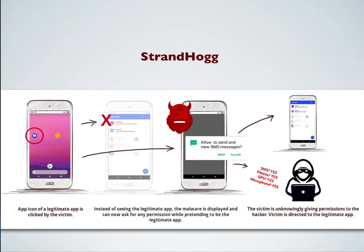Many might think a hacker has to manually target you for this bug to be exploited — that is a wrong assumption. Hackers have now developed bots using artificial intelligence that keep compiling your data automatically without needing to do targeted attacks manually. Whatever data comes in is collected, and once they have a large enough collection, it can be sold on the dark web or used to manipulate you in further attacks. Even if you think you're not a valuable target, you're still vulnerable because hacker bots are now in place.